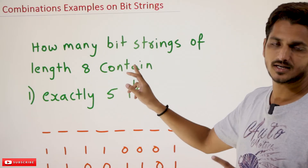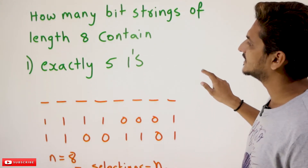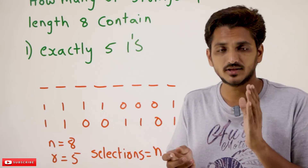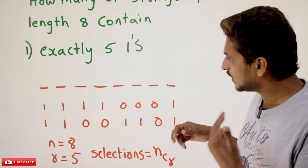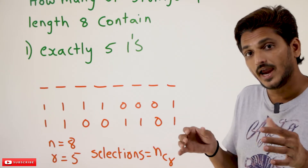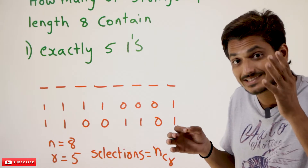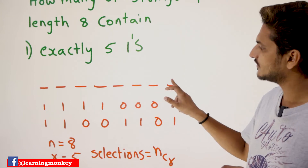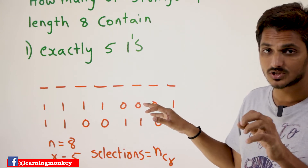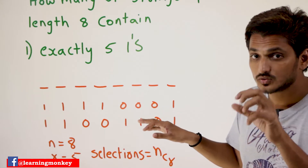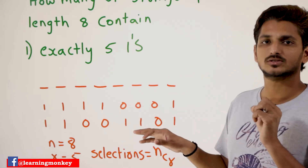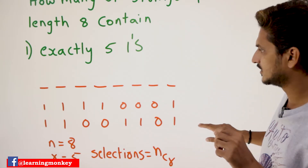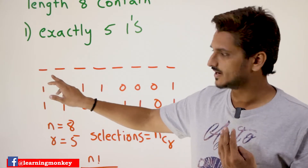Coming to today's class: how many bit strings of length 8 contain exactly 5 ones? Bit strings means you can have either 1 or 0. So there are 8 positions — 1, 2, 3, 4, 5, 6, 7, 8 — and in these 8 positions you have to select any 5 positions. That's why this comes under a selection problem.